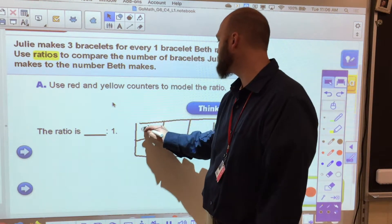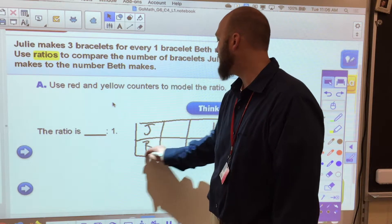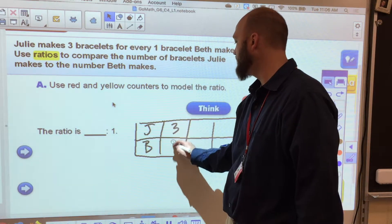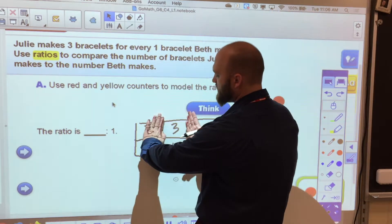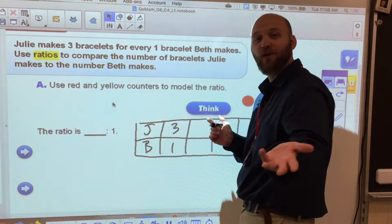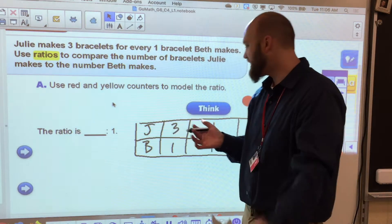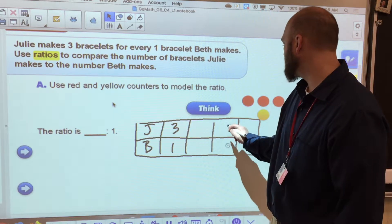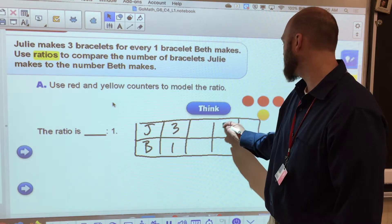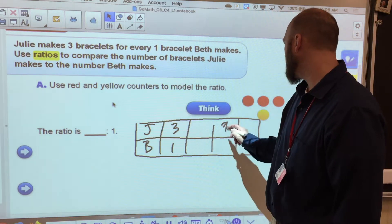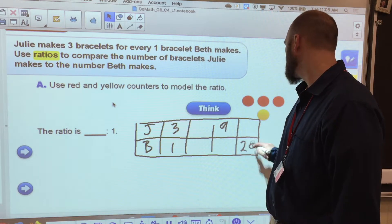So in this case I'm going to say Julie's bracelets to Beth's bracelets and we know that our ratio is three to one. Now if I were to close that off, that is my fractional representation. So that makes sense. So I might see something along the lines of nine and twenty.